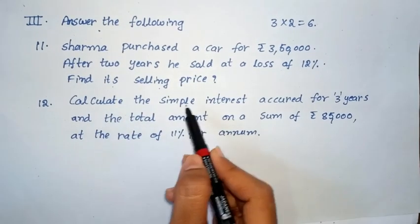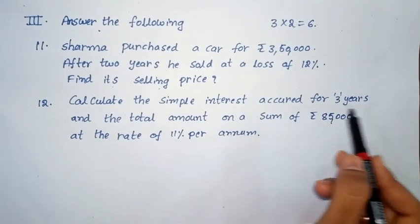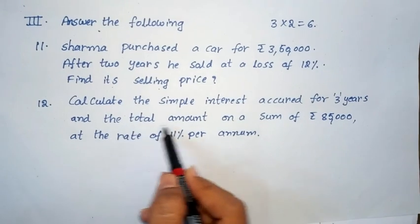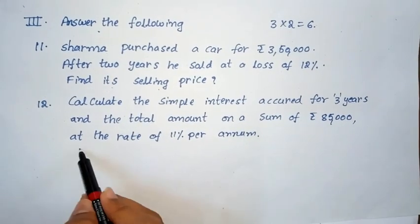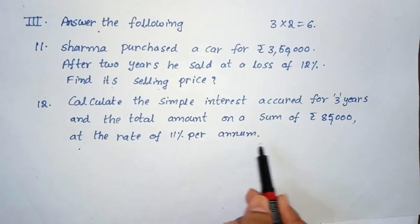Twelfth question, calculate the simple interest occurred for 3 years and the total amount on a sum of Rs. 85,000 at the rate of 11% per annum.